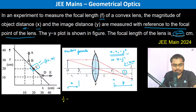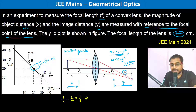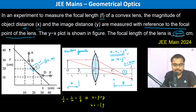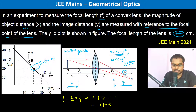We can also solve using the standard lens equation: 1/V minus 1/u equals 1/f. Here V equals f plus y, and u equals minus (f plus x). Since x and y are both 20 centimeters as seen in the graph, V equals f plus 20 and u equals minus (f plus 20).